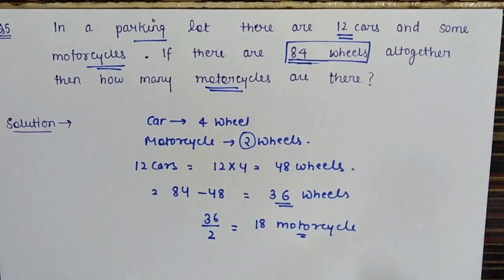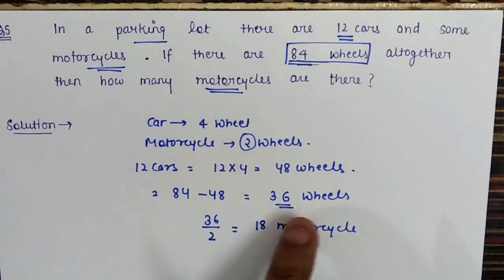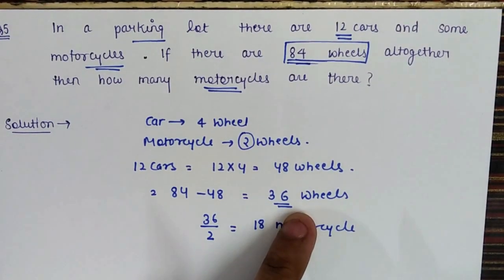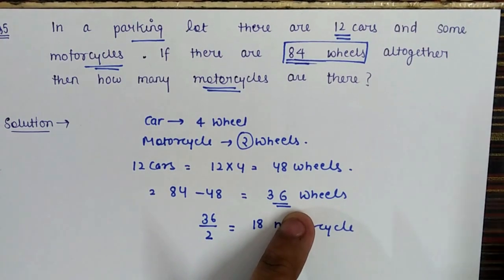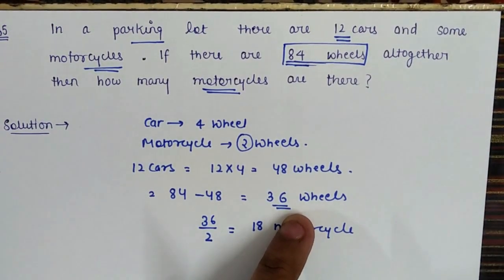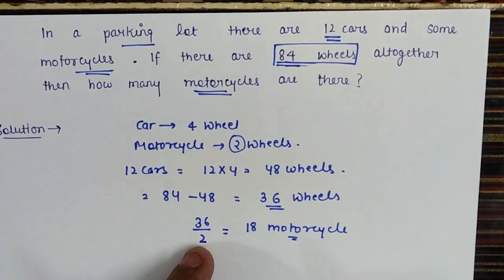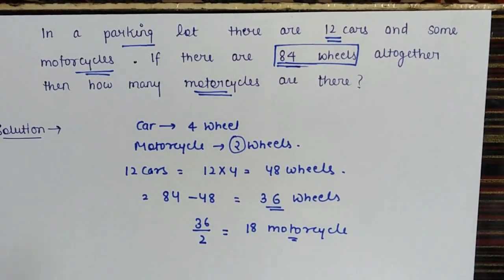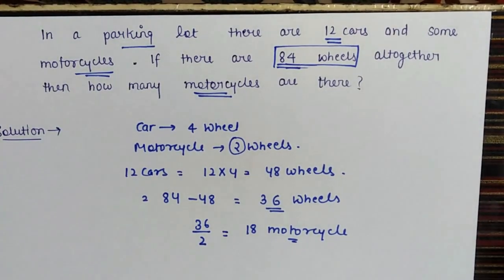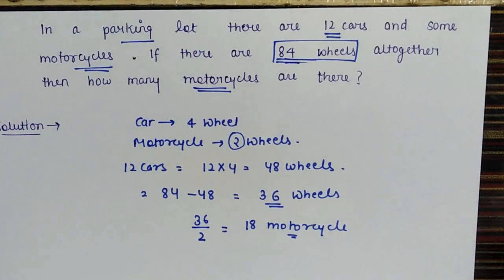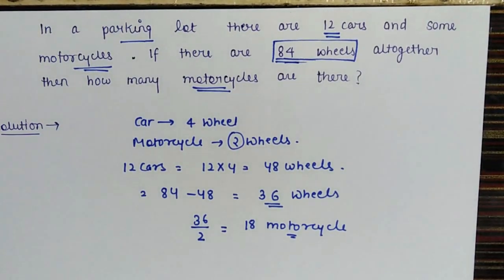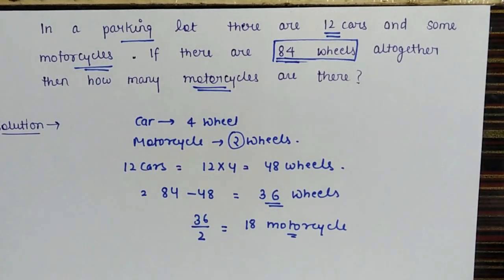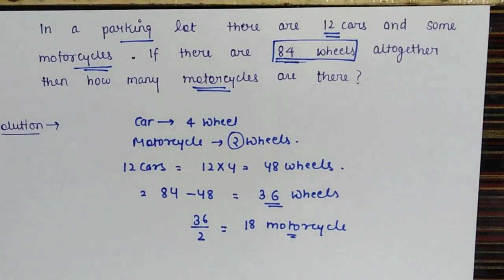So after subtracting 48 wheels for 12 cars from 84, we got 36 wheels. Since one bike has 2 wheels, 18 motorcycles will have 36 wheels in all. Those are the questions for the day. If you have any doubts, post them in the comments. If you haven't subscribed yet, please like, share, and subscribe to our channel. Thank you, have a great day.